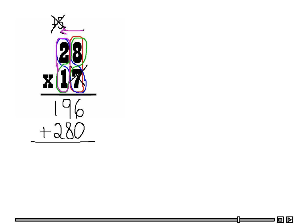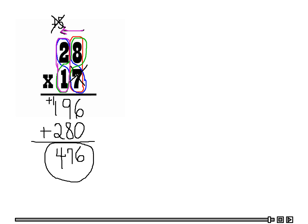So what I need to do now is simply add these numbers. 6 plus 0 is 6, 9 plus 8 is 17 — I need to carry over 1 in the hundreds place. 1 plus 1 is 2, and then 2 plus 2 is 4. So my answer is 476.